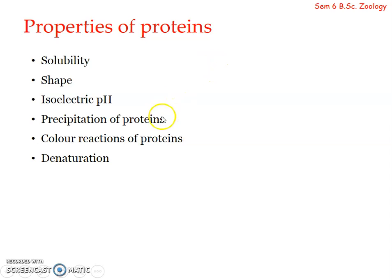The next property is color reactions of proteins. Proteins give several colored reactions which can be used to identify the nature of amino acids present in them. The best example is the biuret test, which is used for detection of proteins in a sample. If you have a sample and don't know what biological molecules are present, you can use the biuret test to detect the presence of proteins. We will be learning it under qualitative tests for the detection of proteins later.